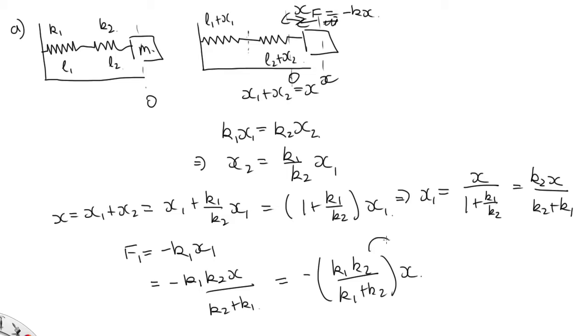So this here is our effective spring constant for this system. And we've derived the equation that the period is equal to 2 pi root m on k.